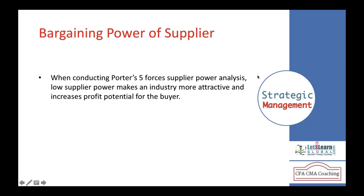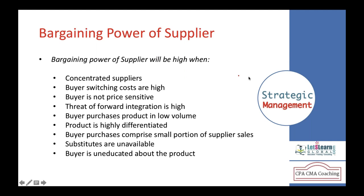The bargaining power of the supplier — our supplier becomes stronger when they are the only one supplying goods to us, meaning a concentrated supplier. If you want to switch from Supplier 1 to Supplier 2 due to issues, but there are heavy switching costs involved, you must compromise with the same supplier. If switching costs are high, the supplier is stronger; if switching costs are lower, the bargaining power of the supplier will be lower.